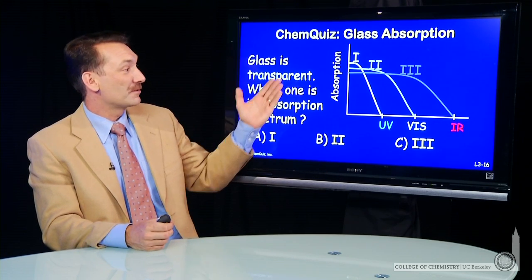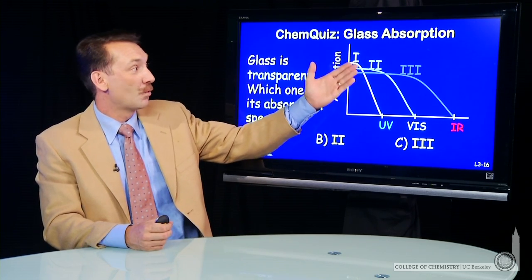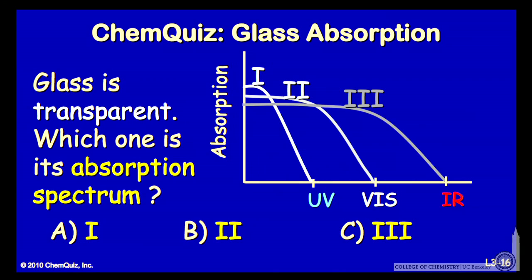Transparent glass should have an absorption spectrum that looks like either 1, 2, or 3. Think about that for a minute and make a selection.